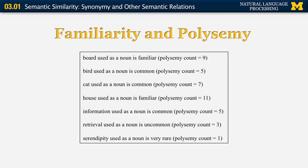Some other properties of words in WordNet include familiarity and polysemy. The polysemy count refers to the number of senses a word has — 'poly' means many, 'semy' means senses. For example, the polysemy count of 'board' used as a noun is 9, and for 'bar' it was 10 or 11. For familiarity, 'board' used as a noun is rated 'familiar.' The available categories are familiar, common, uncommon, rare, and very rare — for example, the word 'serendipity' is very rare. Notably, more common words tend to be more familiar and also have more senses.